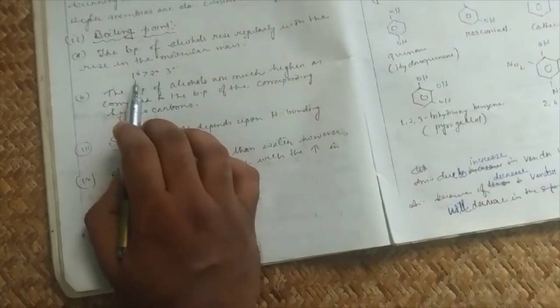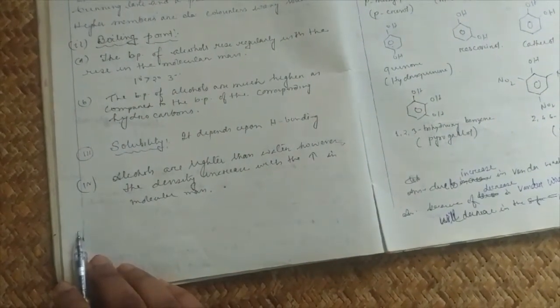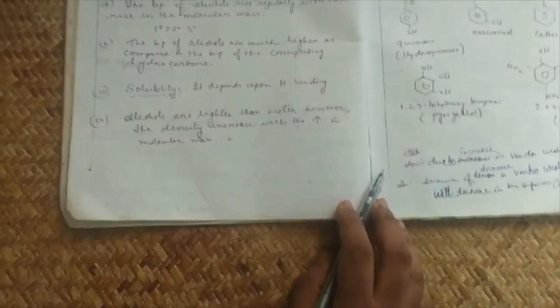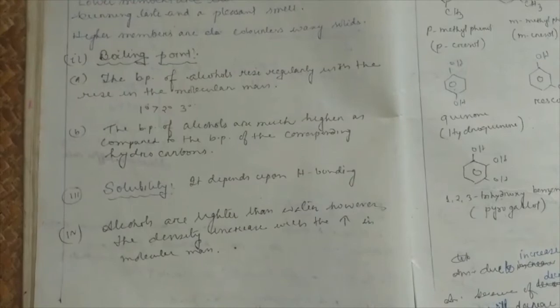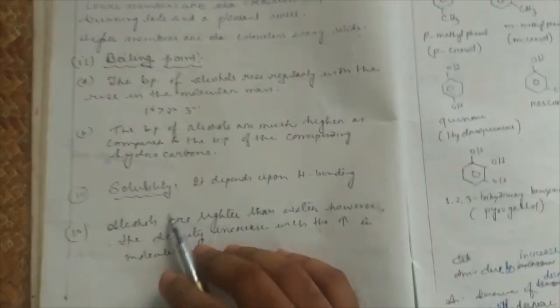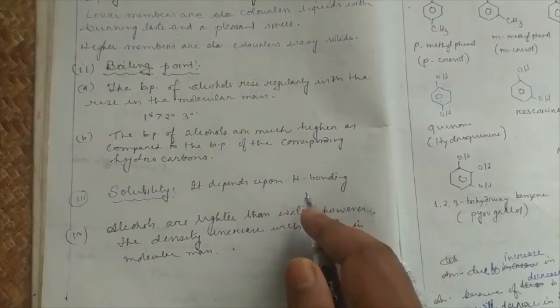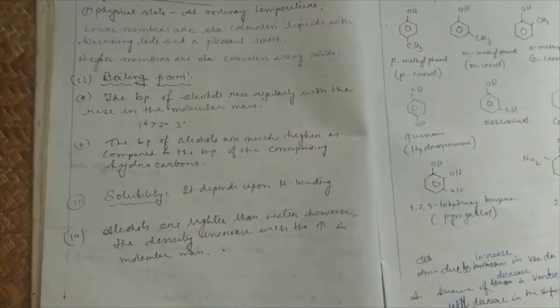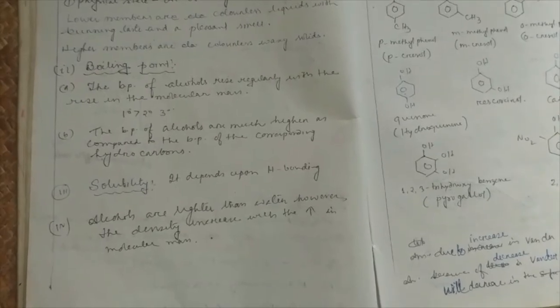Boiling point of alcohol is high. The primary boiling point is higher than secondary and tertiary. Solubility depends on the primary, secondary, and tertiary. Primary is most soluble, secondary and tertiary are less. So this is our physical properties of alcohol.